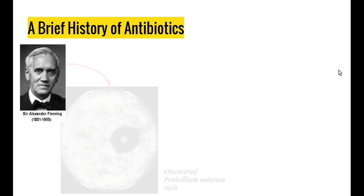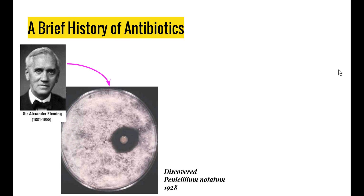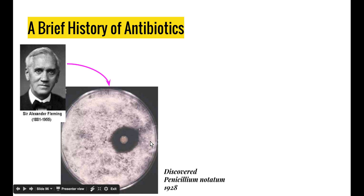Let's have a look at a brief history of antibiotics. Alexander Fleming was a Scottish pharmacologist who was studying the effects of drugs on animal cells. In his lab in 1928, he came across a particular fungus that he called Penicillium notatum that stopped bacteria from growing around it in the petri dish. As we can see, in the middle here we have this spot of fungus growing and there is no bacterial growth anywhere near that particular fungus.